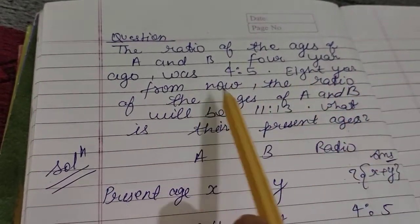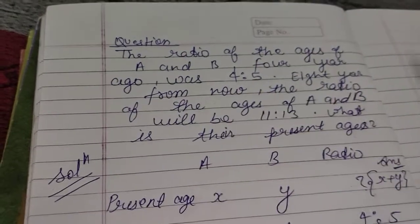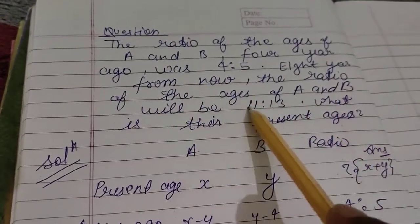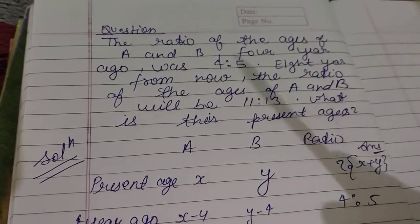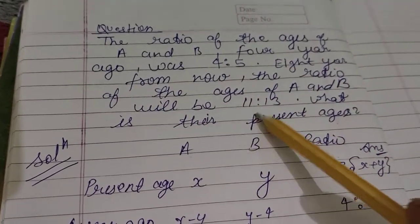And eight years from now, the ratio of the ages of A and B will be 11:13.